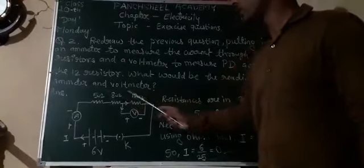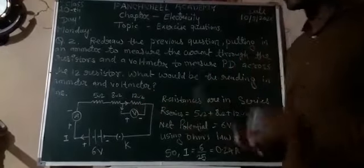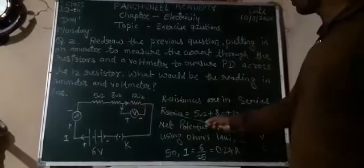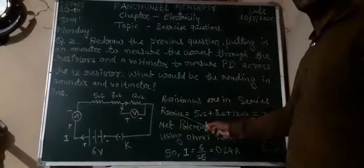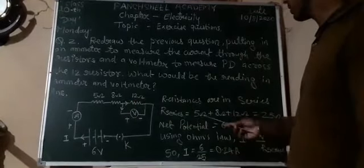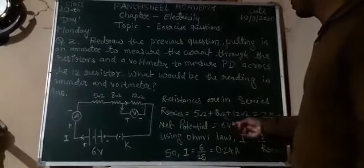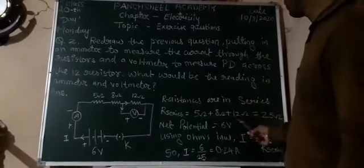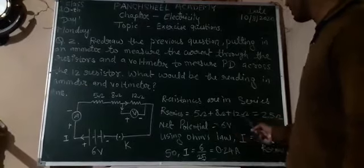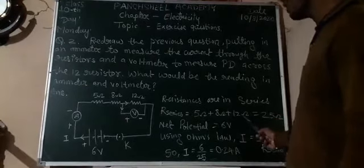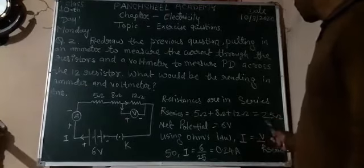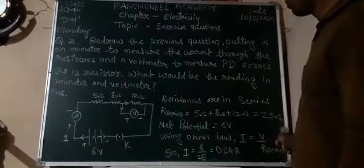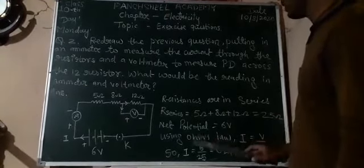The 5 ohm, 8 ohm, and 12 ohm resistors are connected in series. So what is the series resistance? It is 5 + 8 + 12, and the sum is 25 ohms.